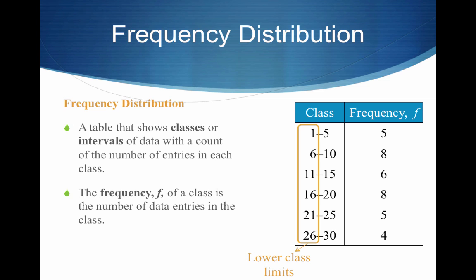Just continuing on with some vocabulary. The left-hand numbers in each class — the 1, 6, 11, 16, 21, and 26 — are referred to as lower class limits. Conversely, the right-hand numbers of the intervals — the 5, 10, 15, 20, 25, and 30 — are going to be the upper class limits.